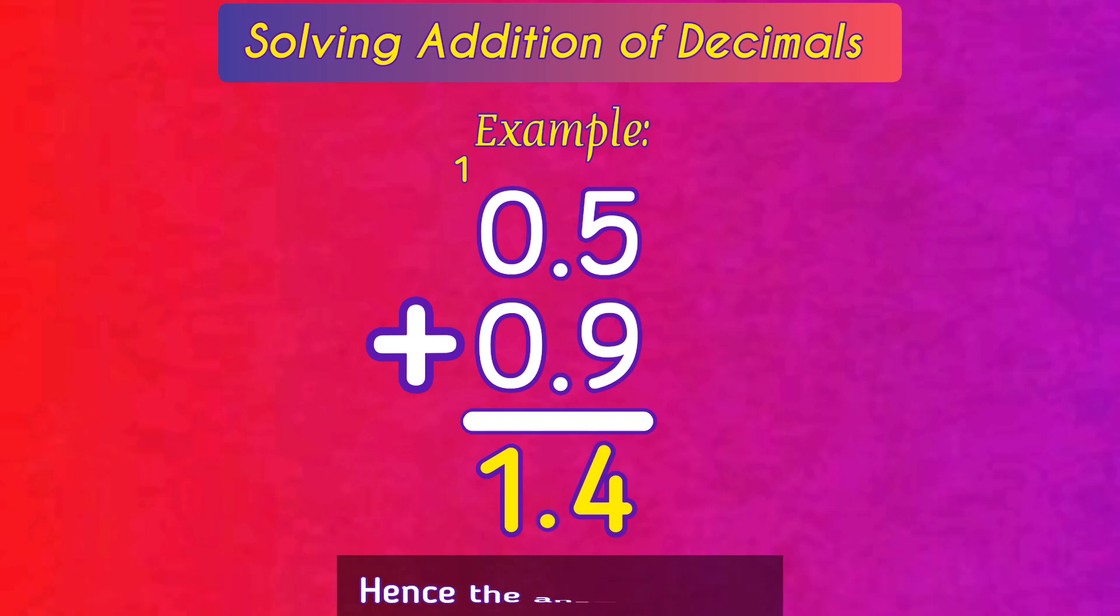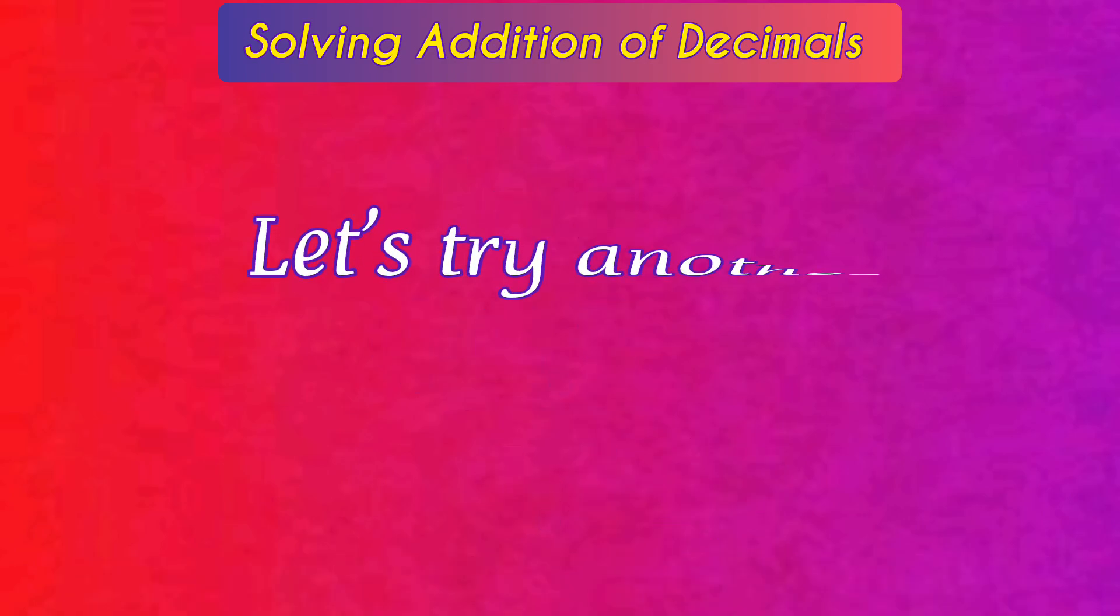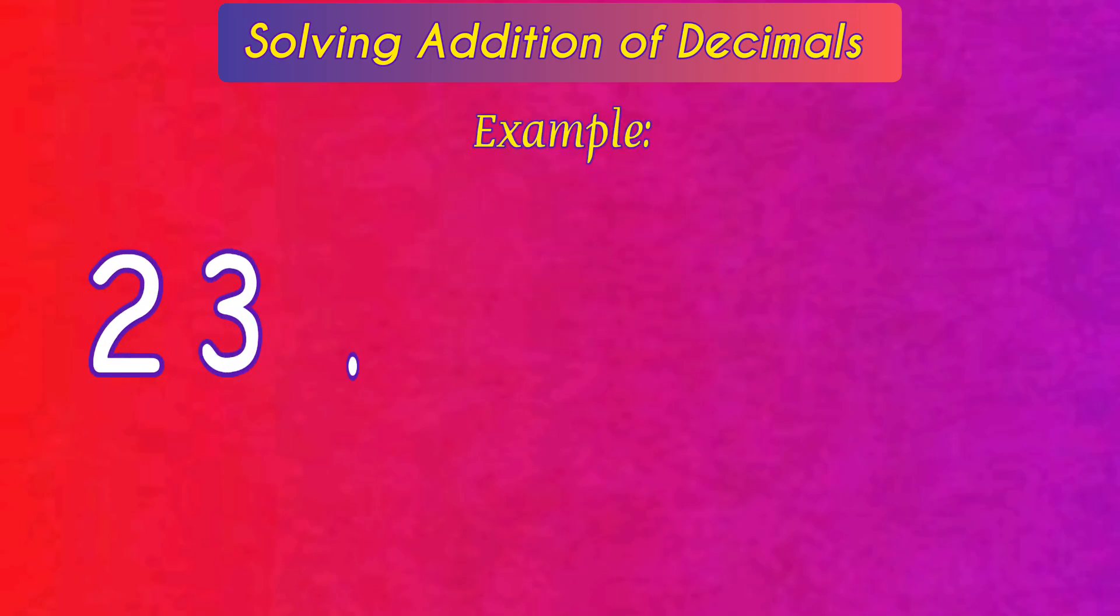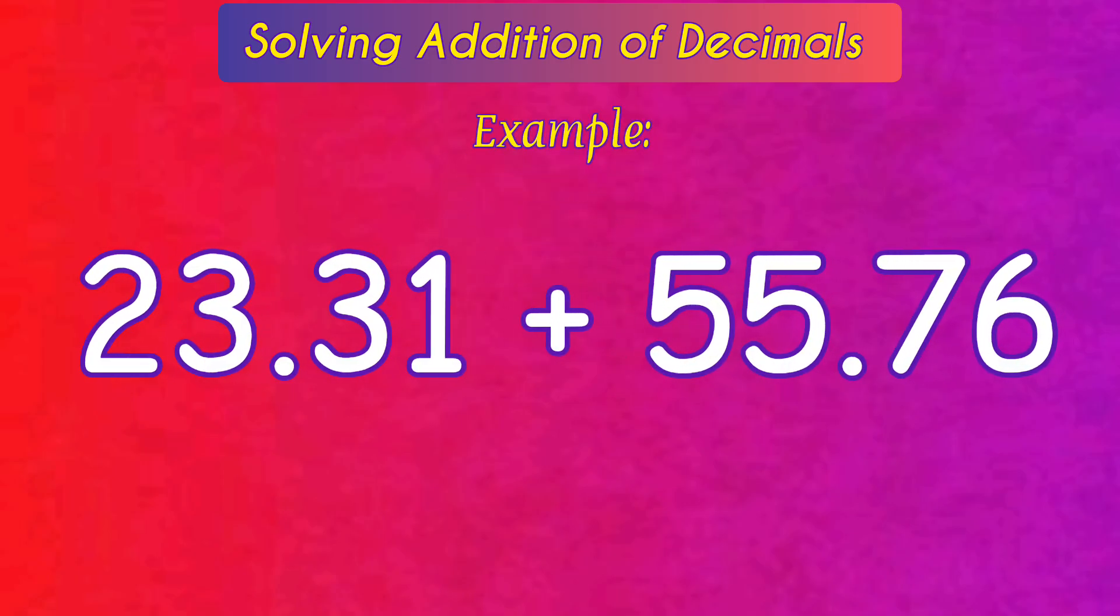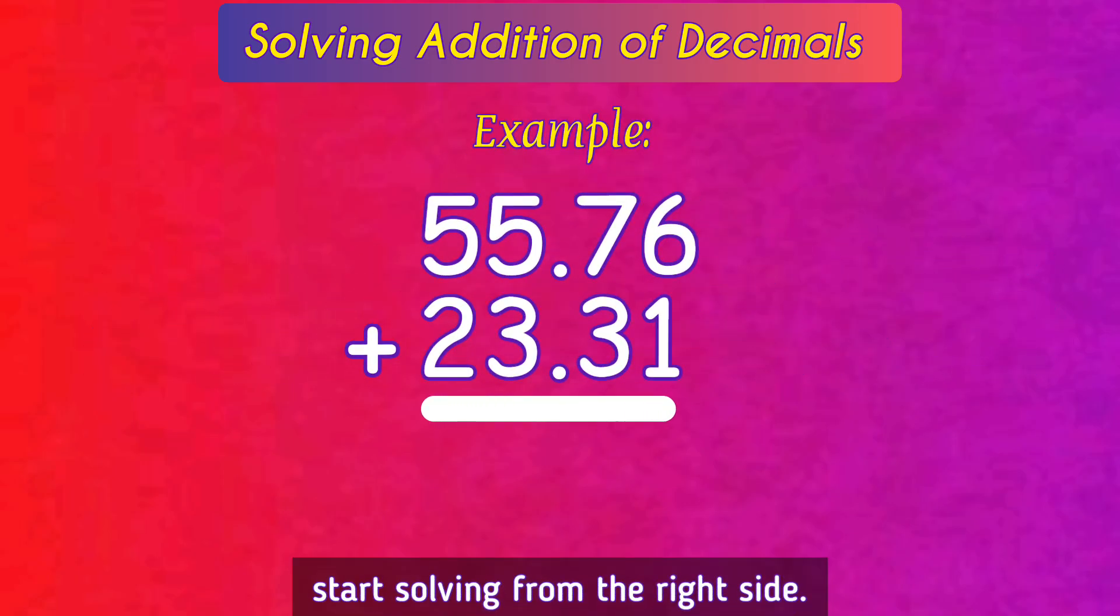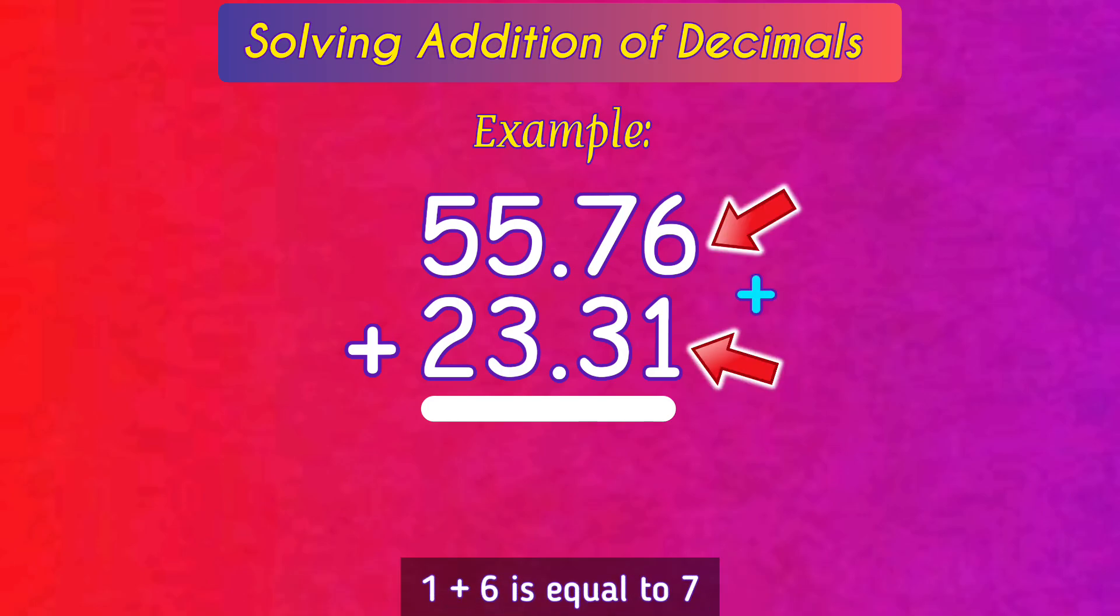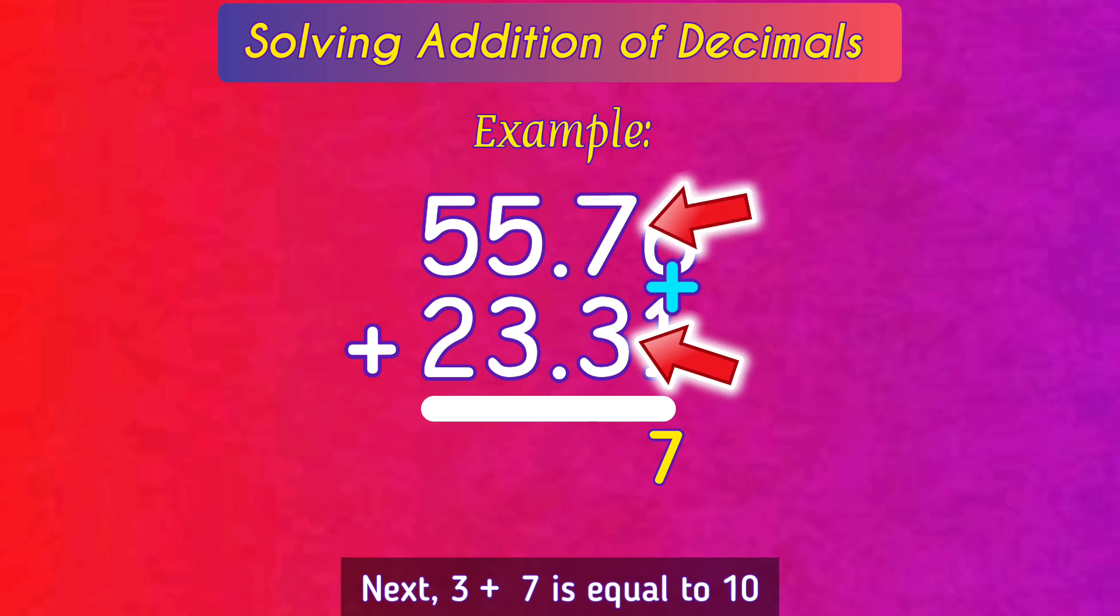Let's try another example: 23.31 plus 55.76. Arrange the following and start solving from the right side. 1 plus 6 is equal to 7, so keep it in the answer. Now 3 plus 7 is equal to 10.